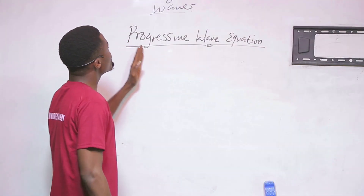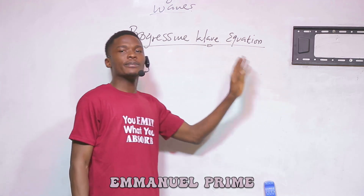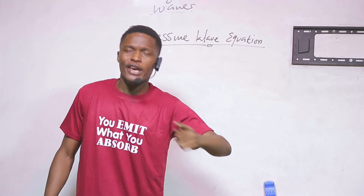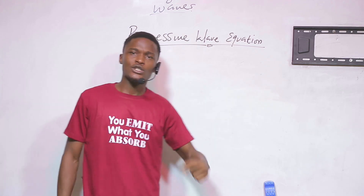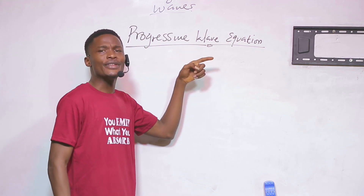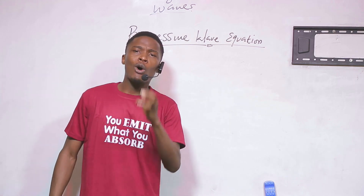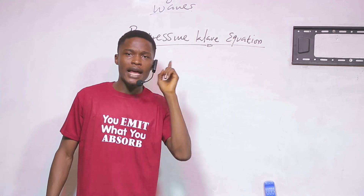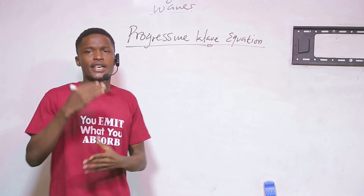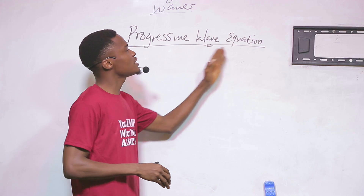We are going to talk about the progressive wave equation. When we say something is progressive, it means it is moving from one point to another. You might ask why we say 'progressive wave' when waves are already moving — that's because we also have something called a standing wave. A progressive wave is simply a wave in motion going from one point to another.